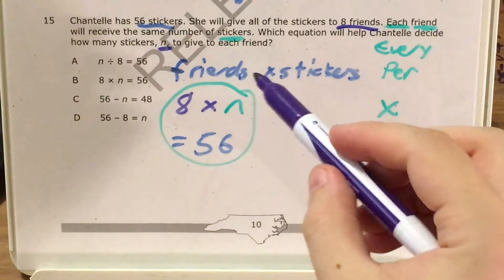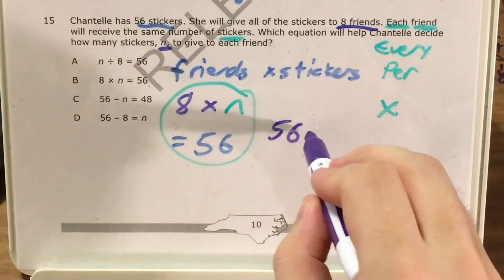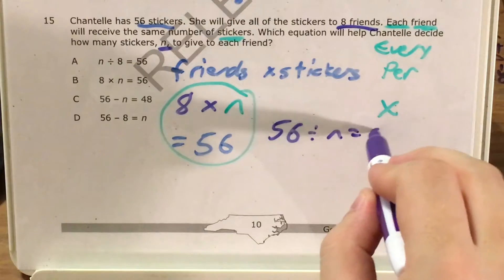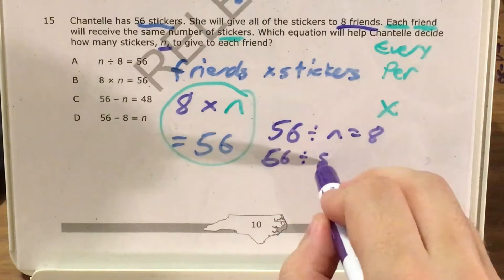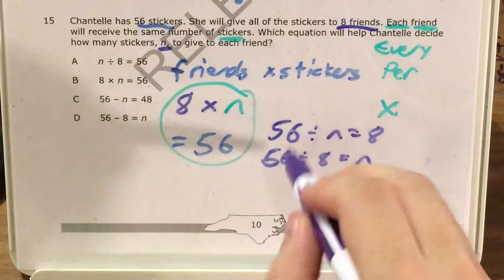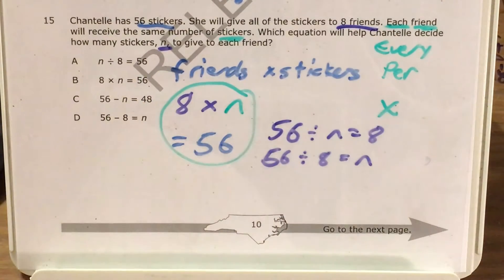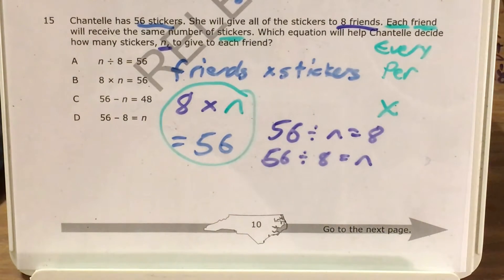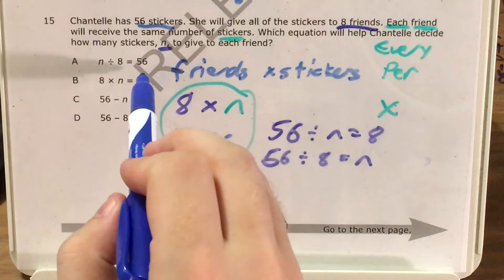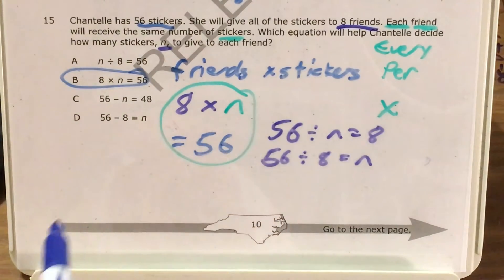Another thing we could look for is using fact families. We could say that 56 divided by n equals eight, or 56 divided by eight equals n. Any of these three equations could be correct, but there's only one answer choice that matches — and that's choice B, where eight times n equals 56.